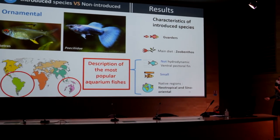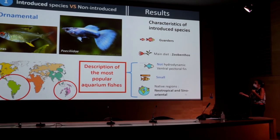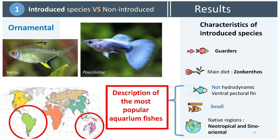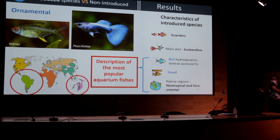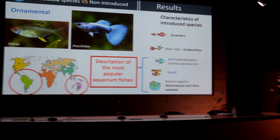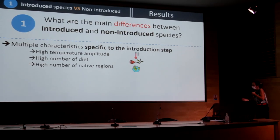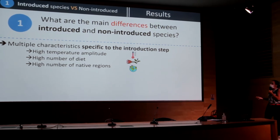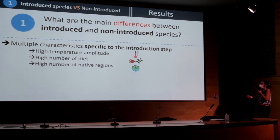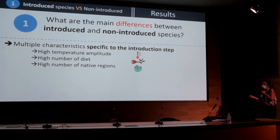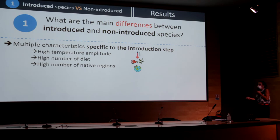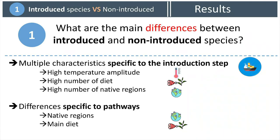Quickly concerning the ornamental pathway, species introduced through this pathway are rather small species coming from tropical regions, which corresponds to the description of the most popular aquarium fish. To summarize this first part of the analysis, there are multiple characteristics specific to the introduction step — such as high temperature amplitude, number of diets, and number of native regions — and also differences specific to pathways such as native regions and main diet.